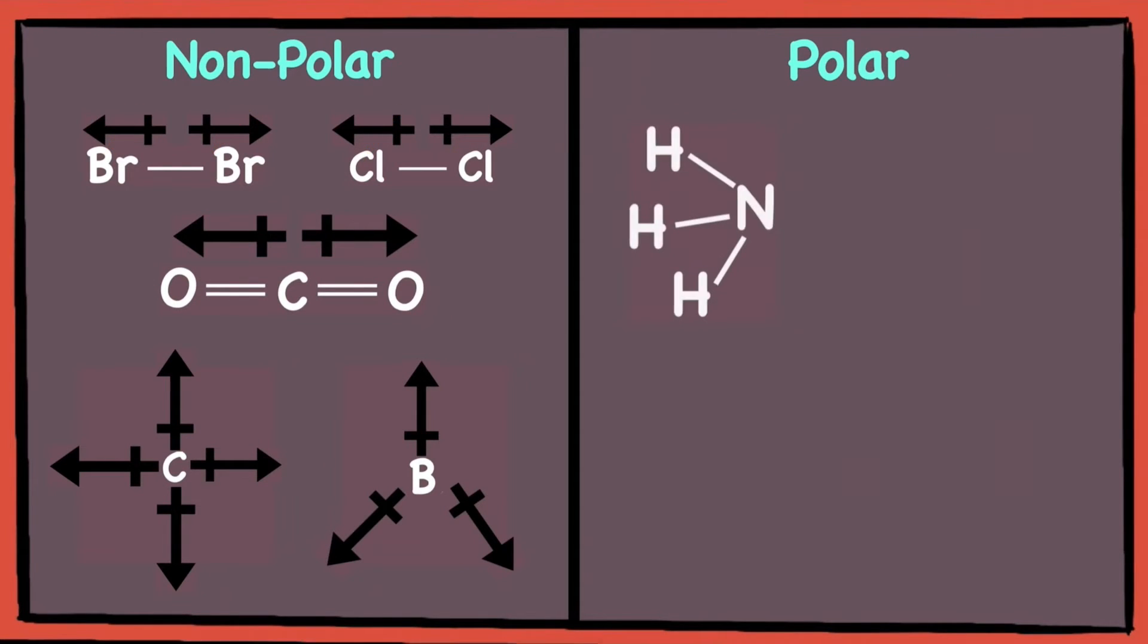Now, let's draw in the dipole moments for ammonia, or NH3. Since nitrogen is more electronegative than hydrogen, the arrow points towards the nitrogen atom. As you can see, due to the shape of the ammonia molecule, it will result in a net dipole moment as the dipole moments do not cancel out. Hence, NH3 is a polar molecule.